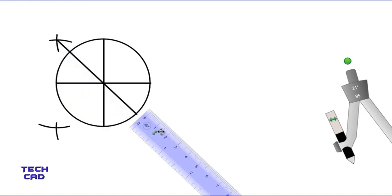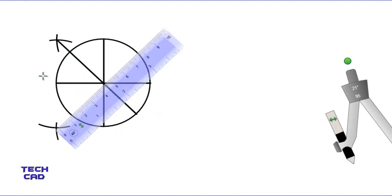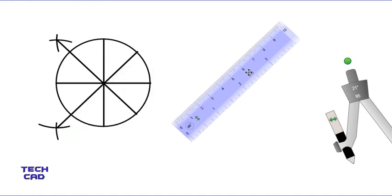In the same way, again put your scale on the intersection — you can see this is the intersection. Now make a line like this. You can see that these are exactly eight equal divisions of my circle. I hope you understand this very well. Thank you everyone.